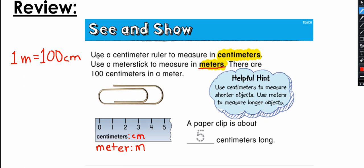One meter is equal to 100 centimeters. For example, if you have a table that is big, you need to measure it with a meter stick or meter tape. Let's say the table is two meters long — that means it is 200 centimeters, because one meter equals 100 centimeters, so two meters equals 200 centimeters.